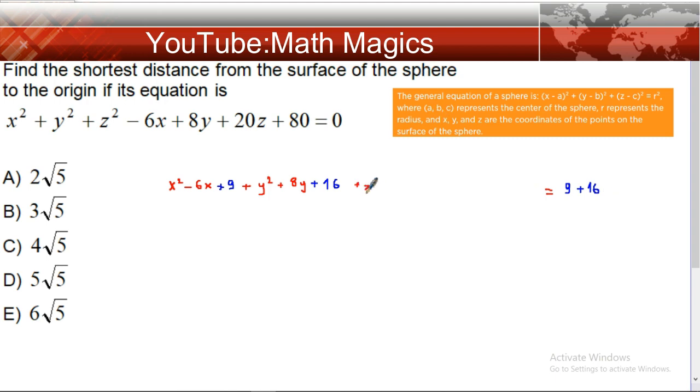Here, x² - 6x + 9 = (x - 3)². y² + 8y + 16 = (y + 4)². And z² + 20z + 100 = (z + 10)².